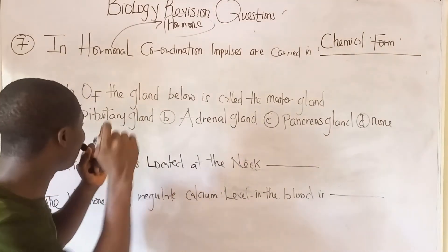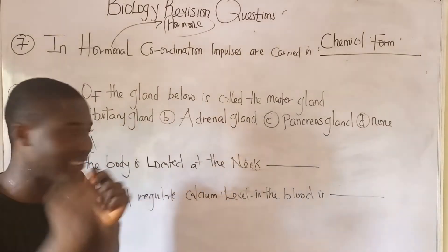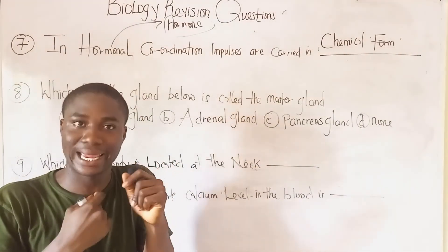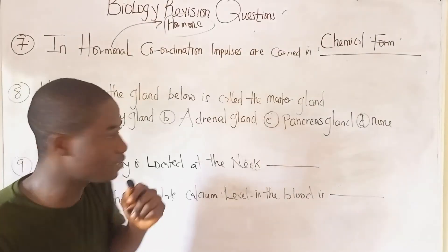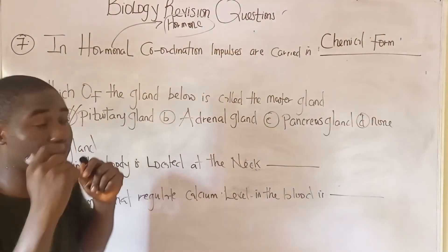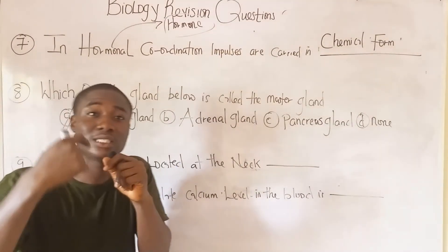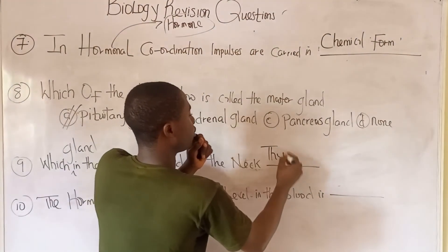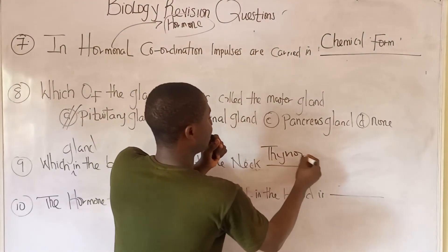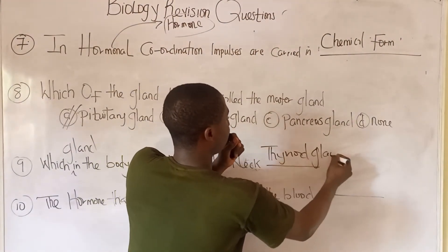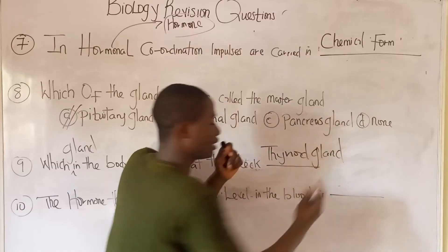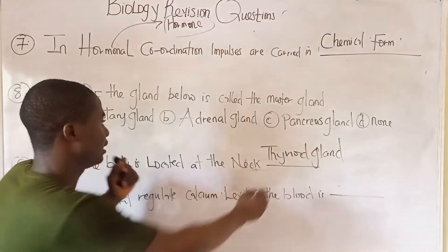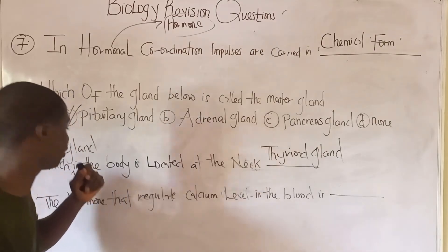Question nine: which gland in the body is located in the neck? The gland located in the neck region is called the thyroid gland.